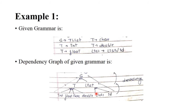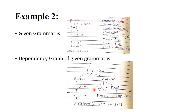The arrows show an upward direction: int, float, character, and double are dependent on T; T is dependent on S. List1 and id are dependent on list, and list is dependent on S. This is the dependency graph — each and every attribute in the parse tree is dependent on each other, shown by upward arrows.